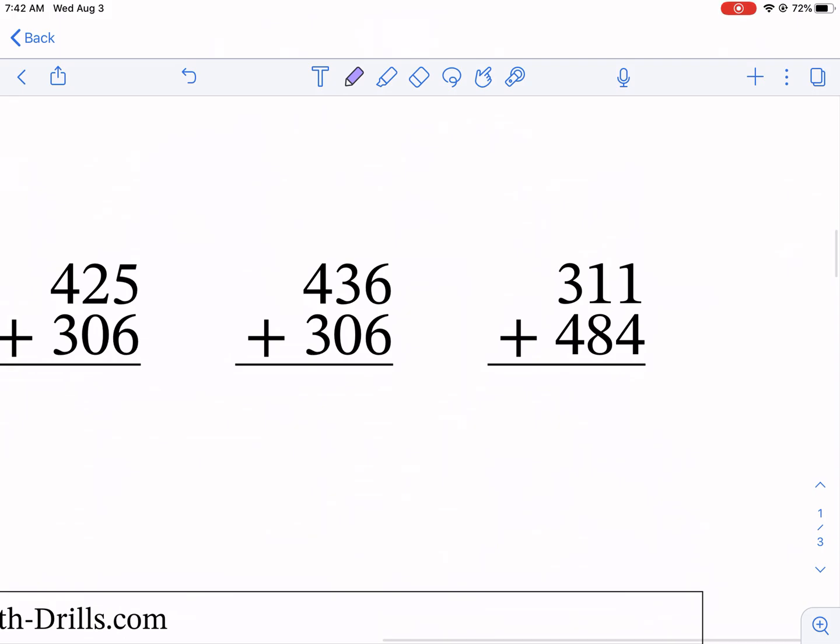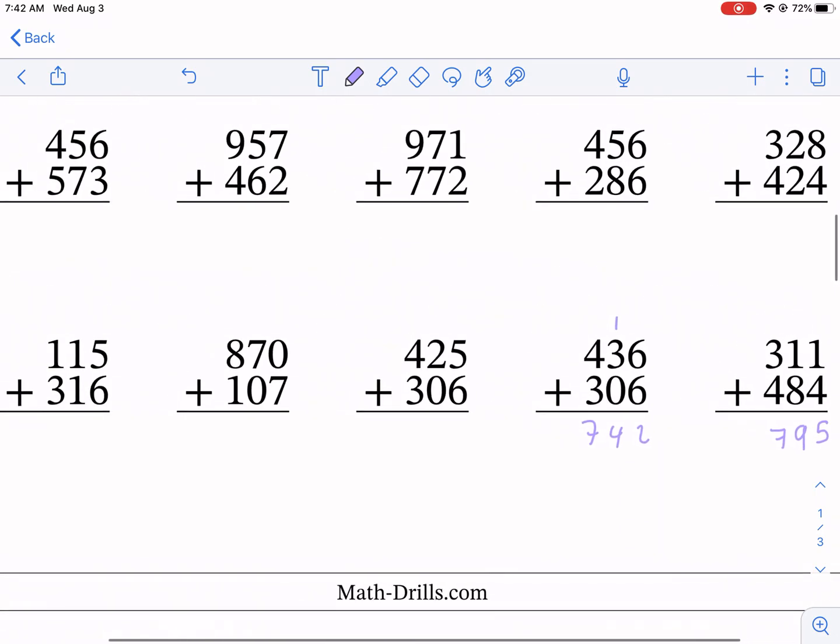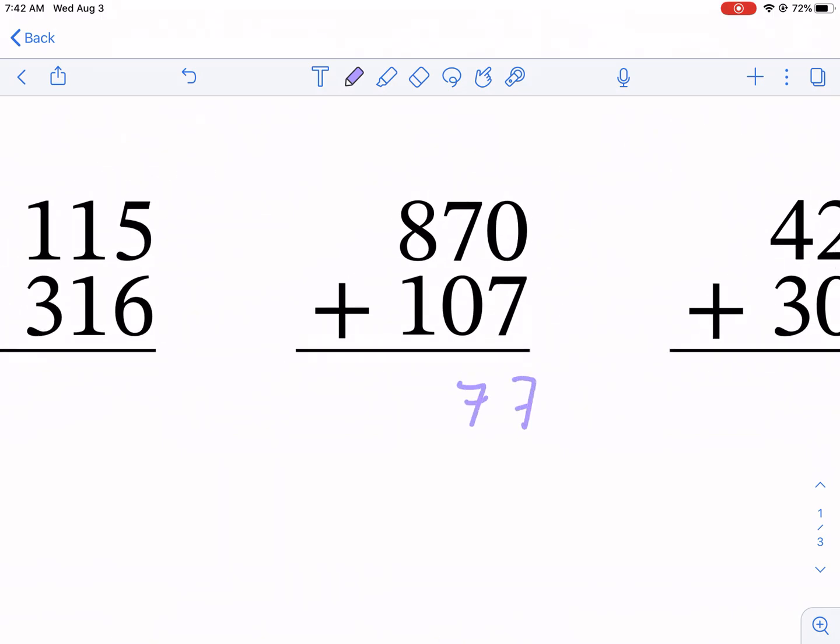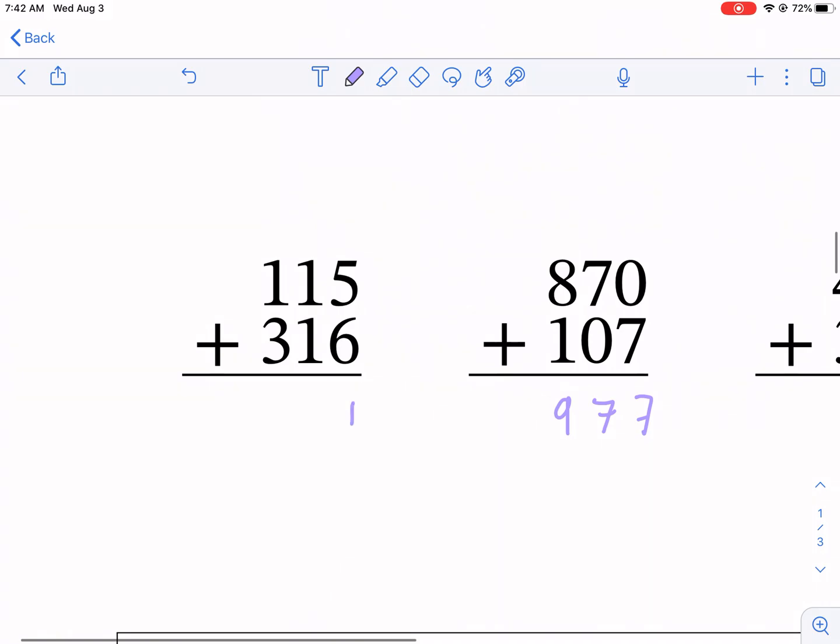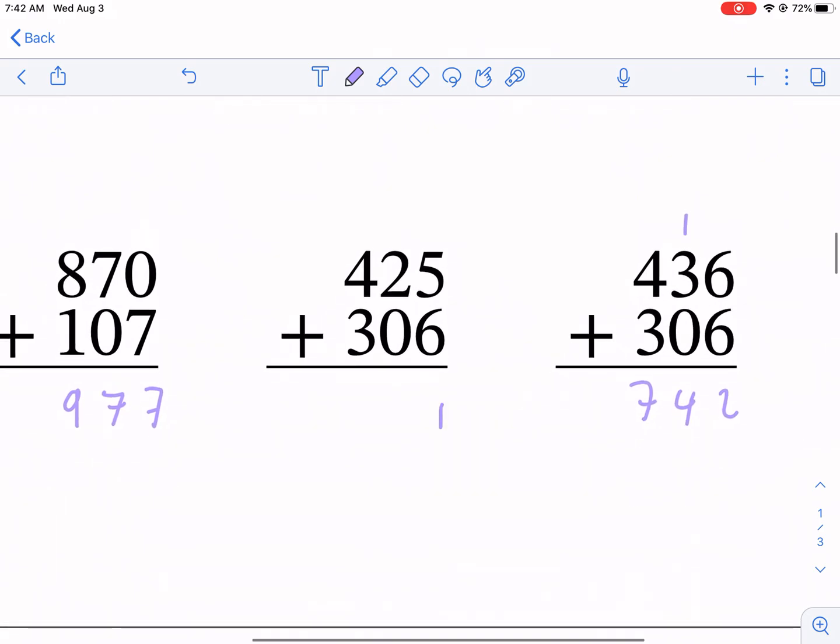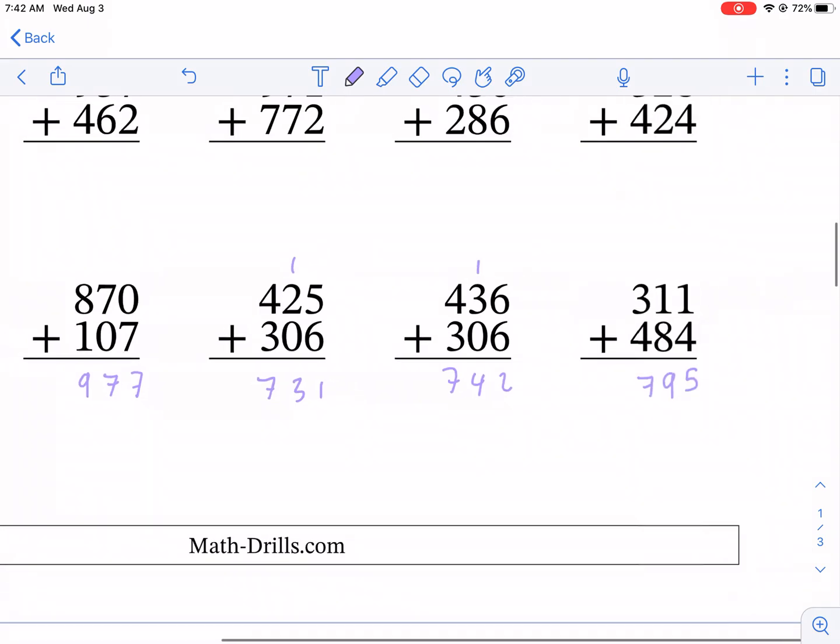We have 1 plus 4 is 5, then 9 plus 7, then 12, we carry it, we get 4, then 7. You get the hang of it. Once you understand the reasoning why we can carry those numbers, it makes it much easier. Then we're just cranking out these numbers.